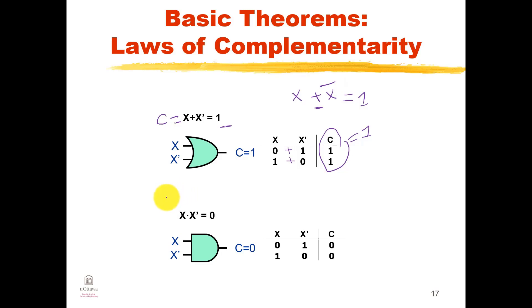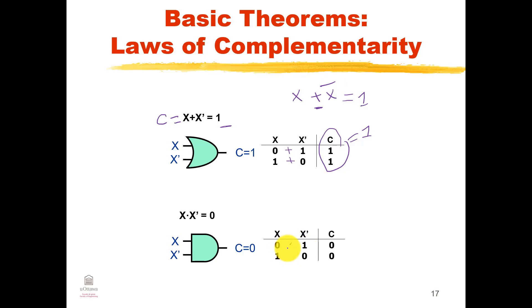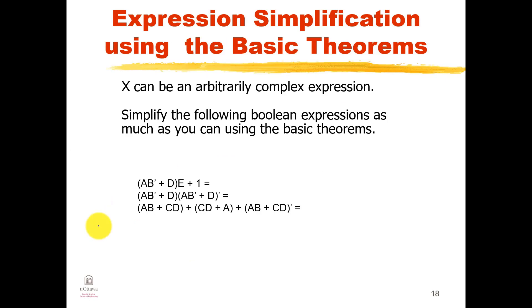For X AND X' = 0: with X=0, X'=1, zero AND one equals zero; with X=1, X'=0, one AND zero equals zero. So C equals zero at all times — therefore X AND X' = 0.